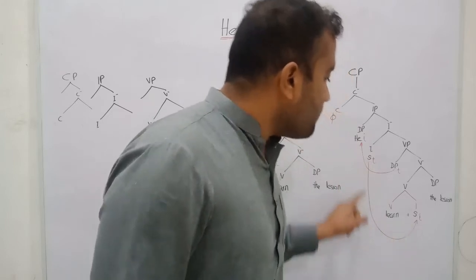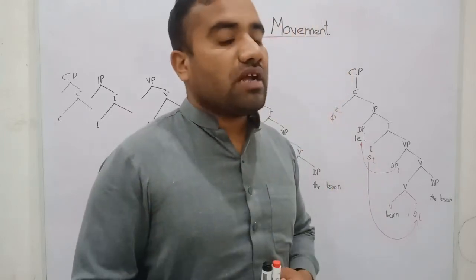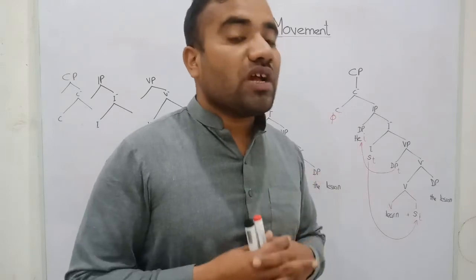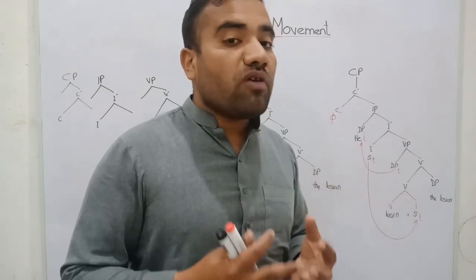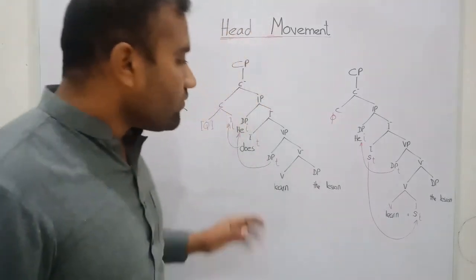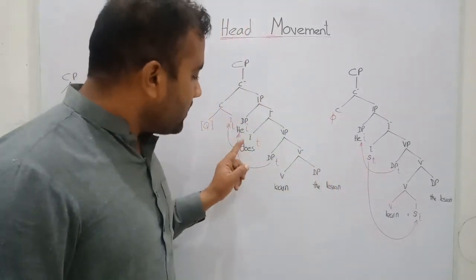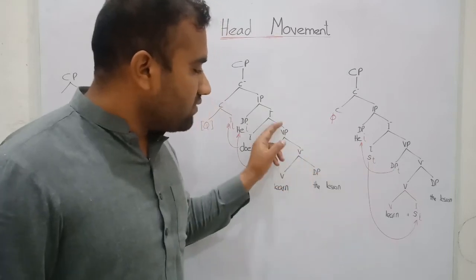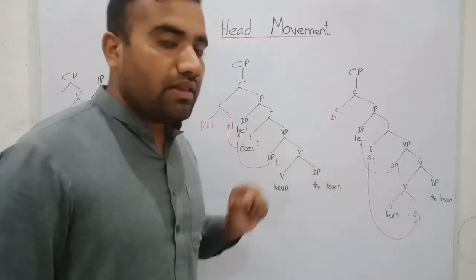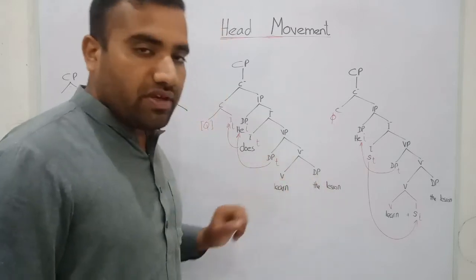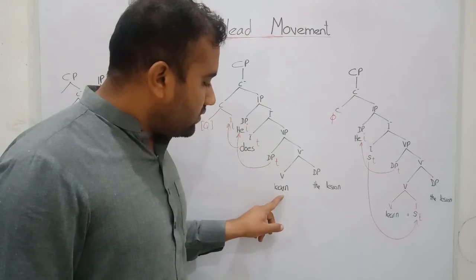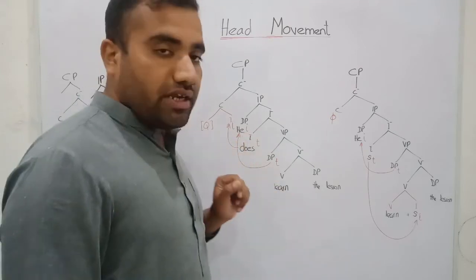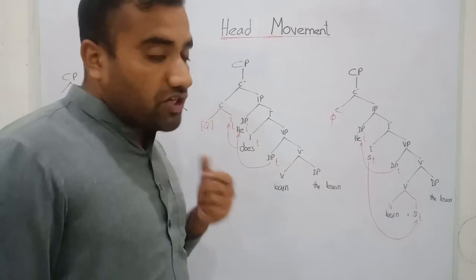This is head-to-head movement in the simple sentence. Now, if we want to draw the interrogative sentence — what will be the structure of the interrogative sentence and what will be the movement of the head? We have the same sentence: 'he learned the lesson.' Similarly, we consider the VP layer with DP, DP, and V. There is a V head and an I head.